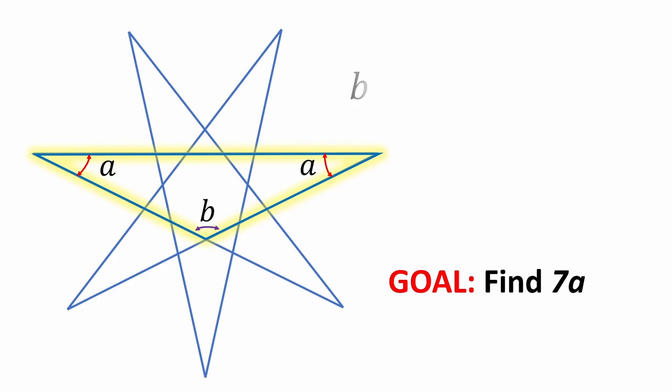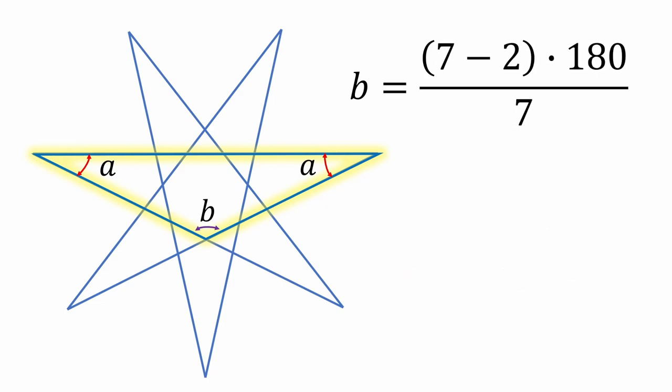Now recall that for a regular polygon, the interior angle, in this case B, is just (n-2)×180/n, where n is the number of sides. So let's set n equal to 7. And when we plug that value into the equation, we get 5×180/7 for B.